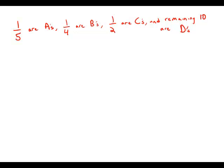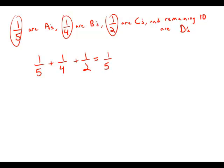Well, the first thing we need to do is figure out what these three fractions add up to. So, one-fifth plus one-fourth plus one-half. The least common denominator of these is 20, so I'm going to multiply the one-fifth by four over four, multiply the one-fourth by five over five, and multiply the one-half by ten over ten.